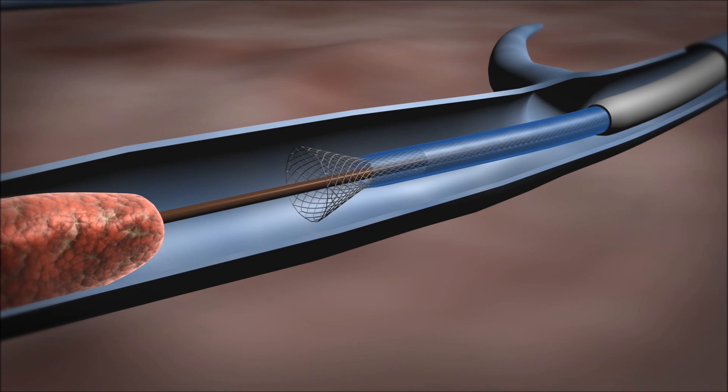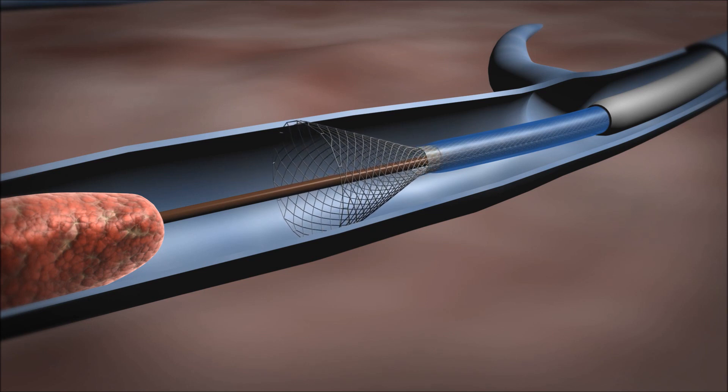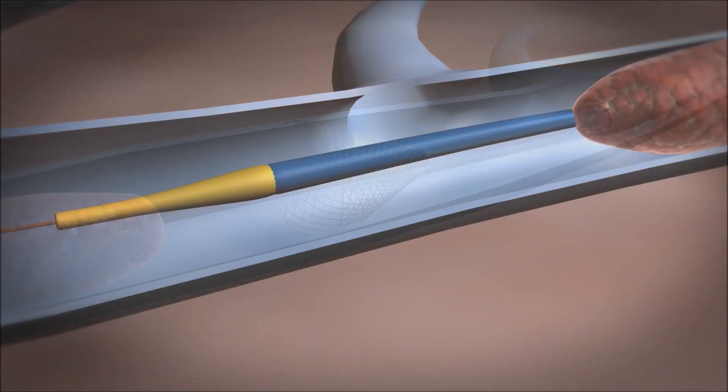The funnel sheath is retracted to deploy the self-expanding funnel, which provides proximal embolic protection and is used to guide the clot removal.